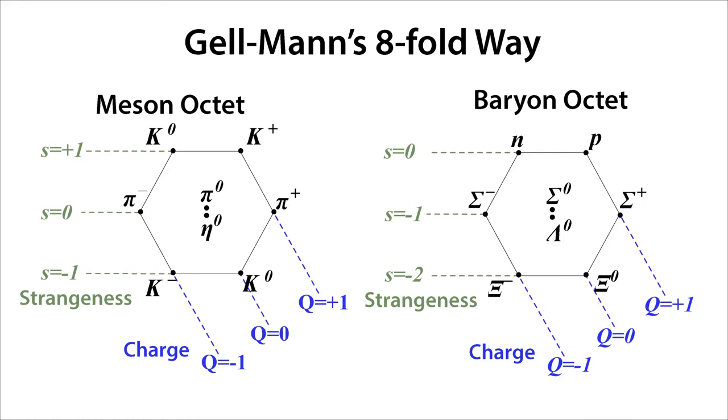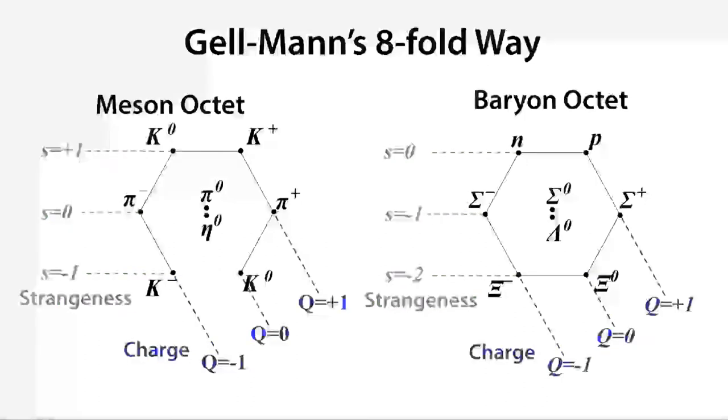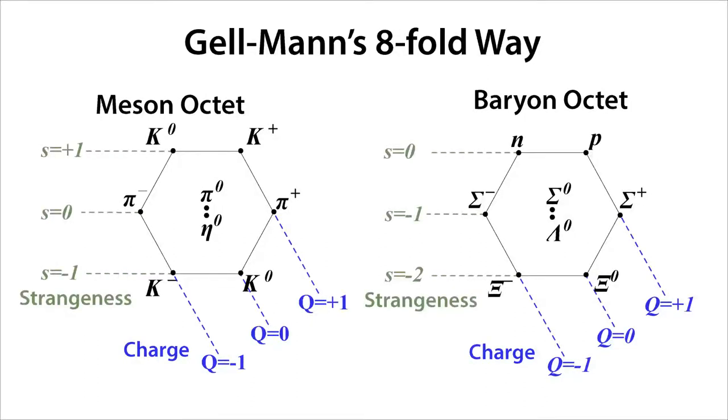The baryons, or the light baryons, were also grouped into an octet. But differently to the mesons, the baryons had an octet and the anti-baryons had a separate octet. So there were two octets for the baryons, one for the baryons, one for the anti-baryons, whereas the mesons were together.